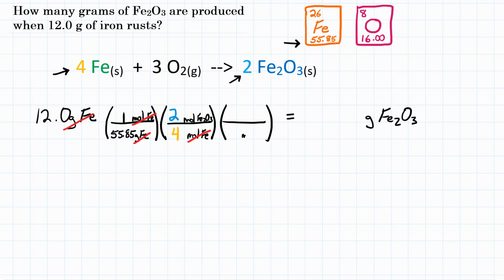And we want grams of Fe2O3. So what's the relationship between moles and grams of rust? Well, to find that out, we're going to have to get the molar mass of Fe2O3, or specifically, how many grams is one mole of Fe2O3.